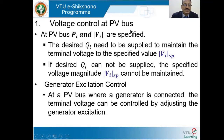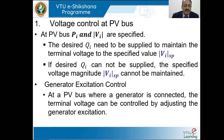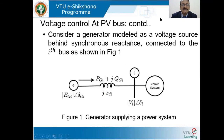Voltage control at a PV bus: in a PV bus, Pi and Vi are specified. The desired reactive power injection Qi needs to be supplied to maintain the terminal voltage Vi to the specified value Vi_sp. If the desired Qi cannot be supplied, the specified voltage magnitude Vi_sp cannot be maintained. The reactive power requirement at the bus can be supplied by generator excitation control. At a PV bus where a generator is connected, the terminal voltage can be controlled by adjusting the generator excitation.